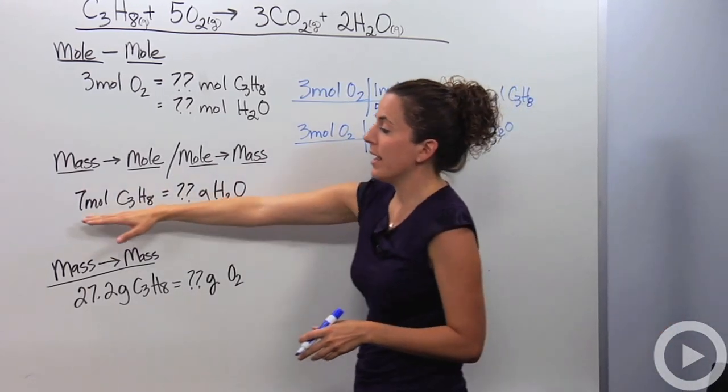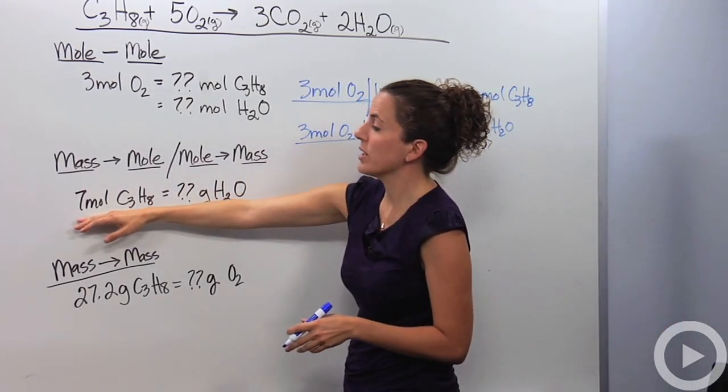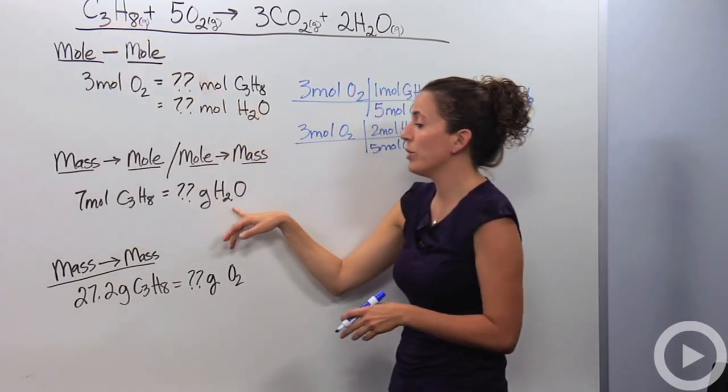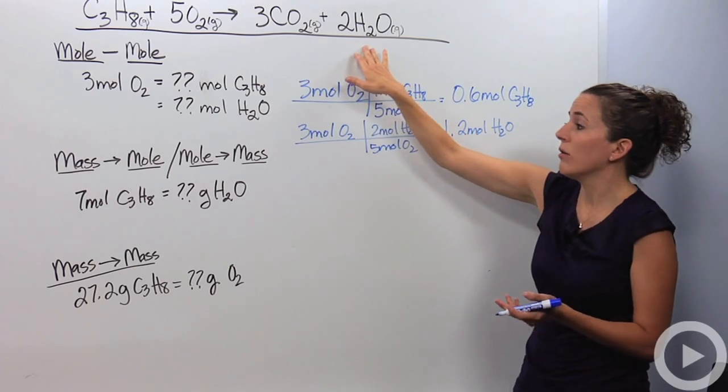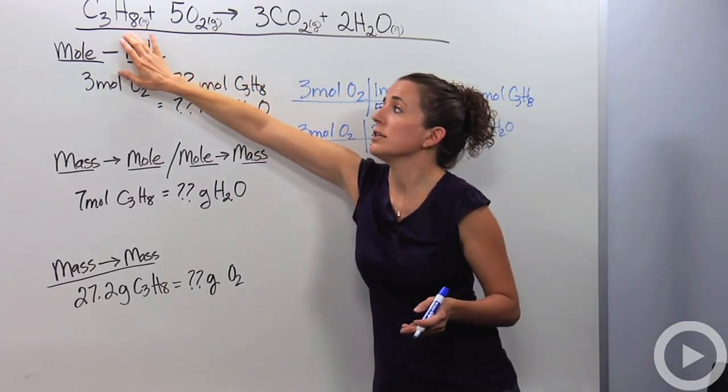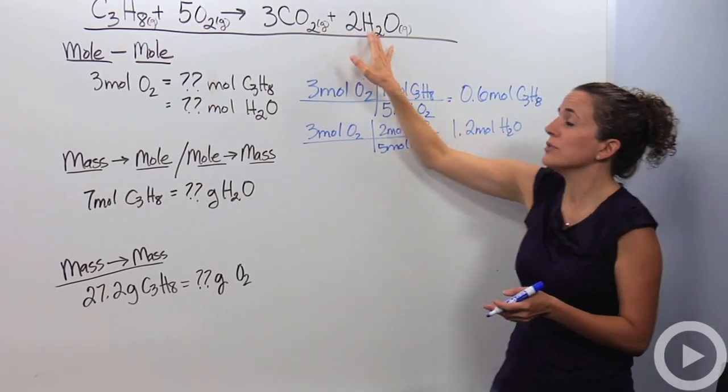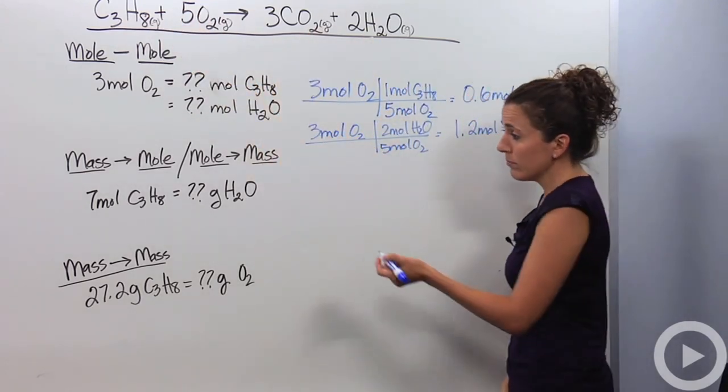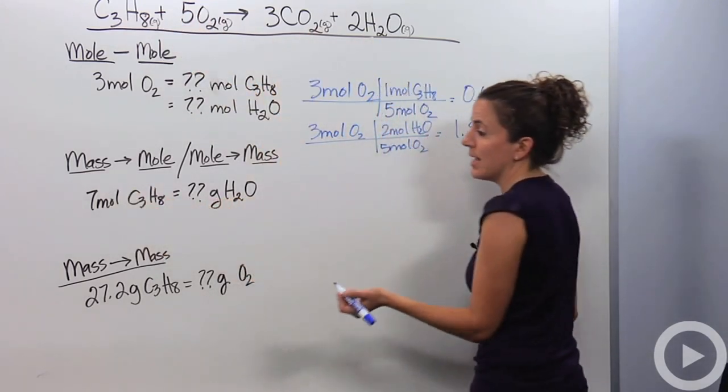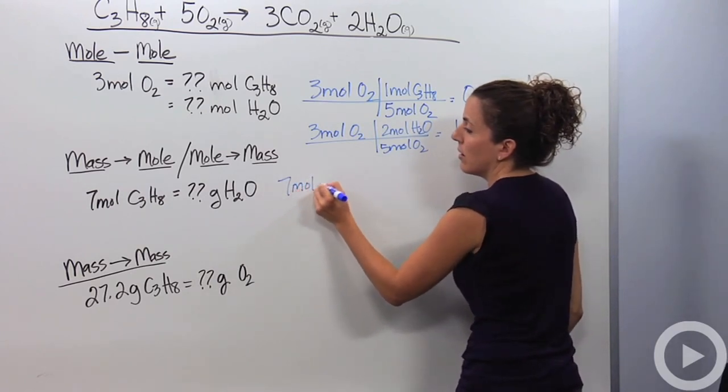Let's take it one step further. Let's say I have 7 moles of C3H8 here and I want to know what mass of water am I going to be able to produce? Well, the only way I can compare C3H8 and H2O is through the molar relationship. It's the only information I have. So I'm going to start out with what's given, which is 7 moles of C3H8.